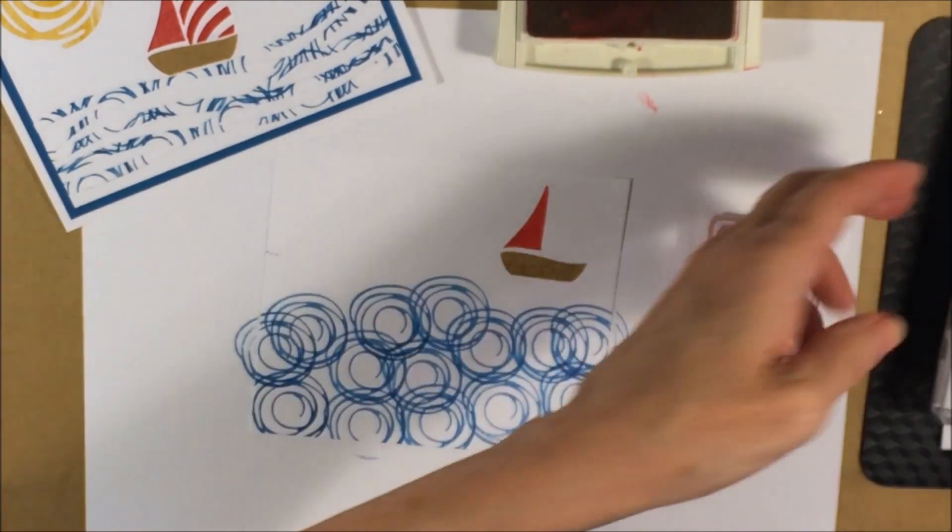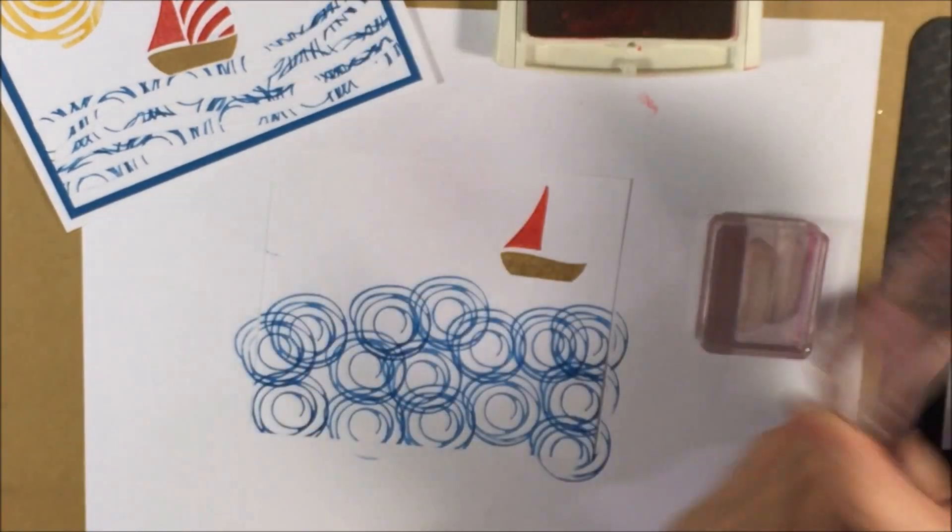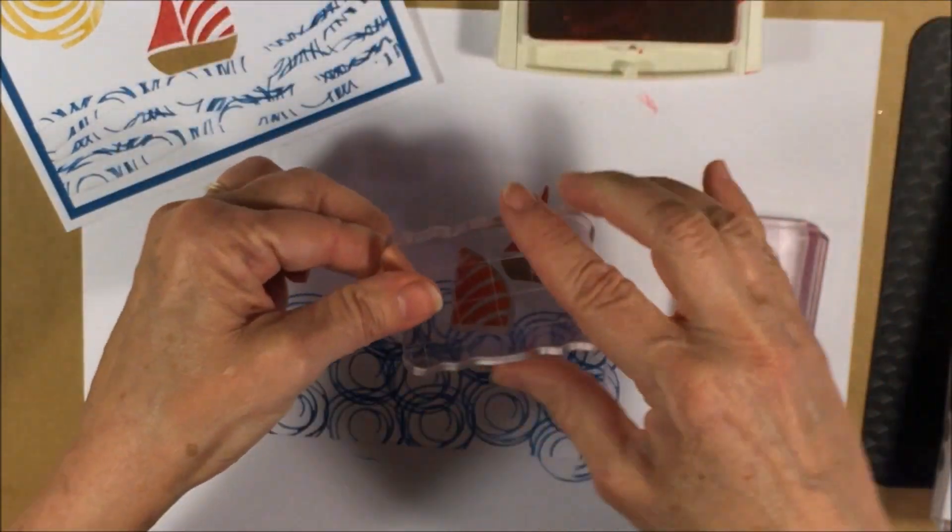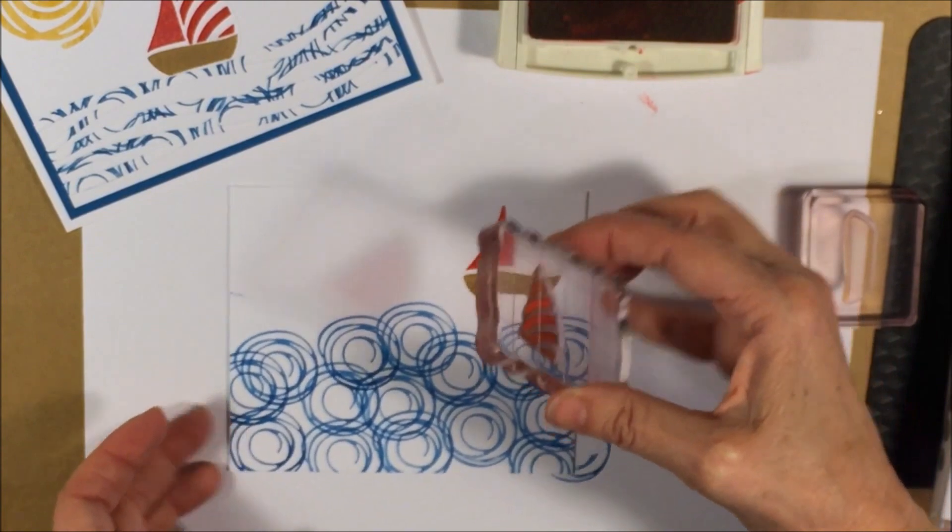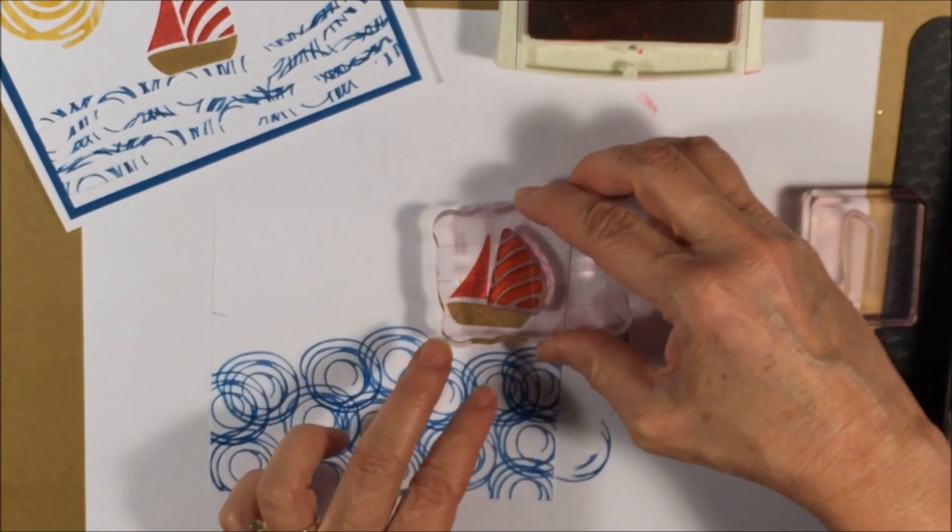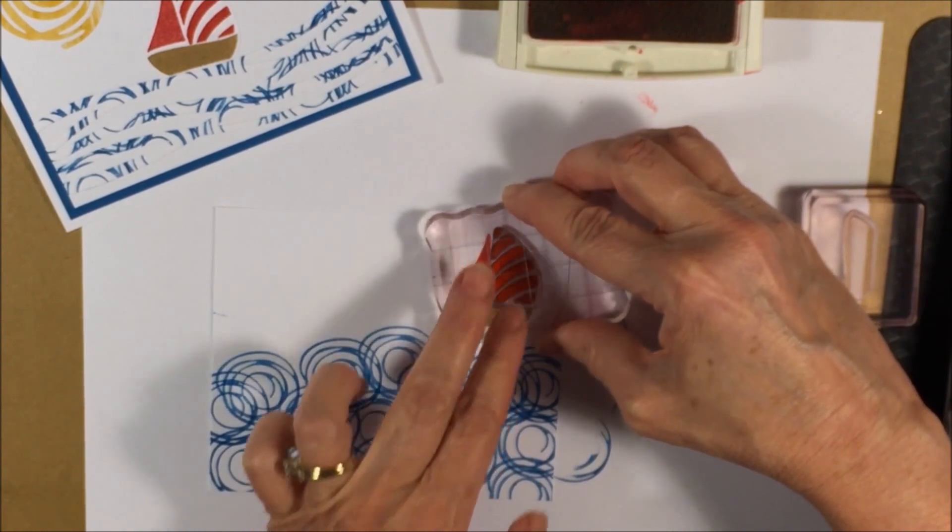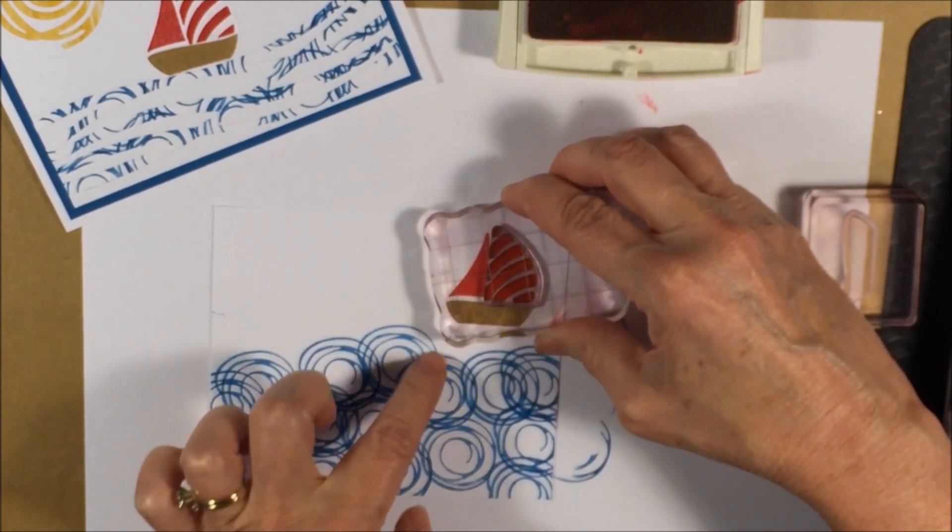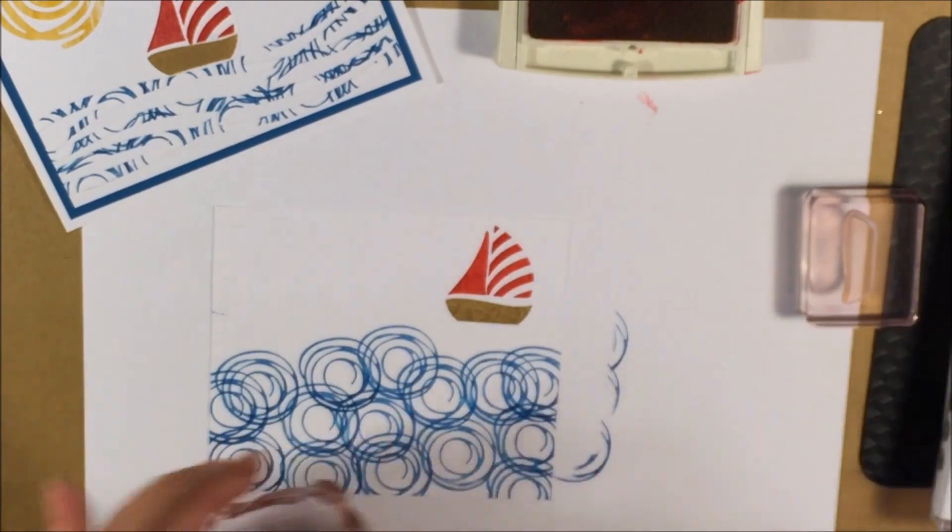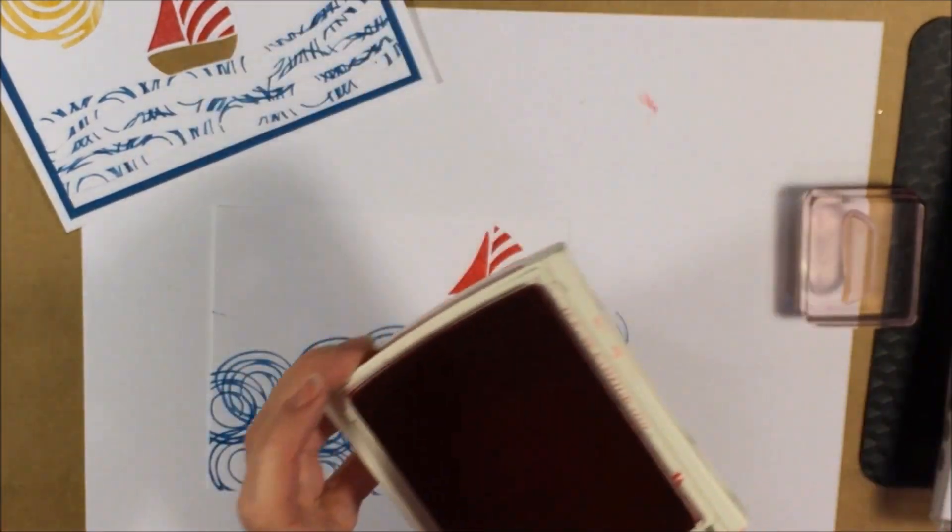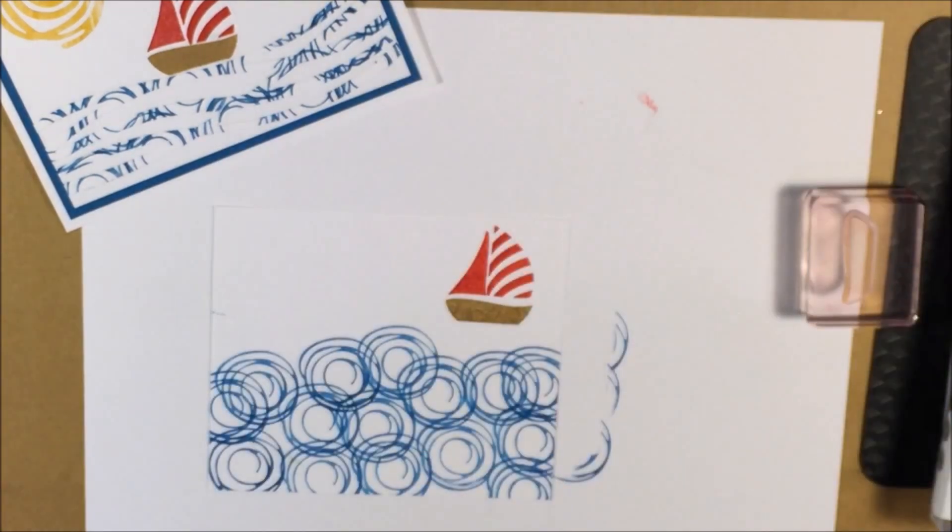And then the striped piece right here. It's nice you can see through these stamps so you can place your stamp wherever you'd like it.